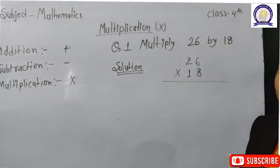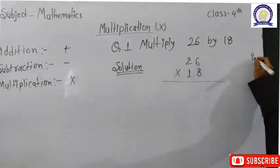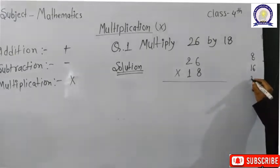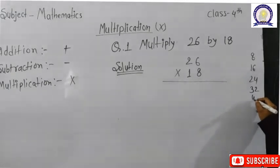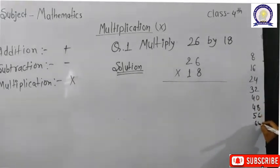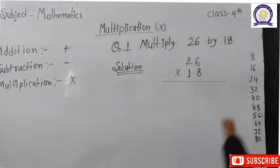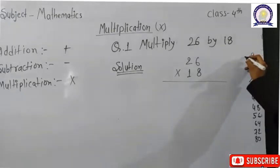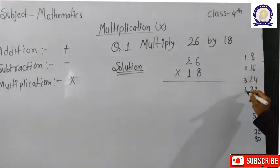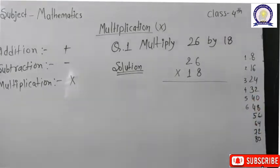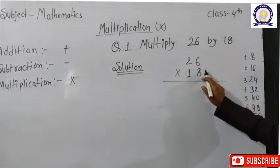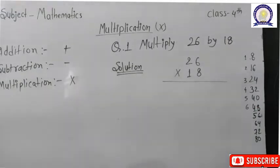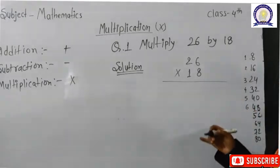Just as in addition we arrange numbers, similarly in multiplication we also arrange the numbers first. We write the ones, then the tens. Then we find the next digit according to the place value chart. Just as addition and subtraction require counting, multiplication requires knowing tables. If 8 is written, you need to know the 8 times table to do the multiplication.